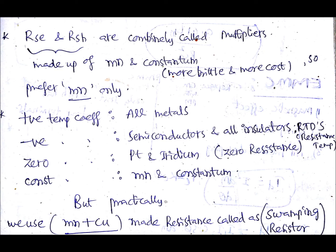Then platinum and iridium which are having zero resistance are having zero temperature coefficient. Similarly Manganin and Constantan are having constant temperature coefficient, but practically we use Manganin plus copper made resistance which is known as swamping resistor for making those resistors, that is multipliers.